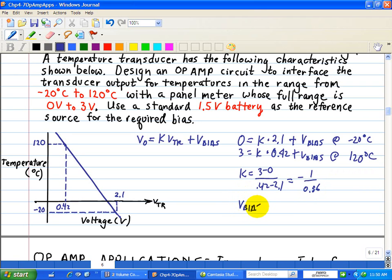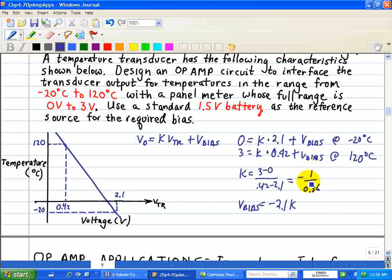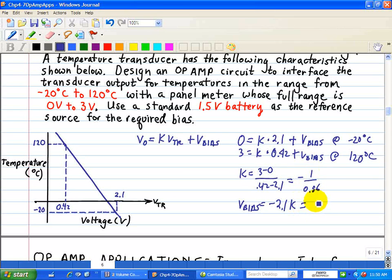Now solving for V bias, we have the following relationship. We have negative 2.1 times K, but we saw K is negative over negative 1 divided by 0.56, or simply 3.75 volts.